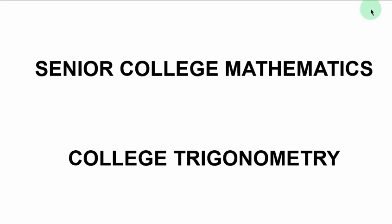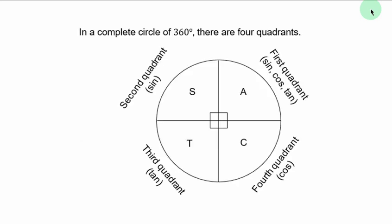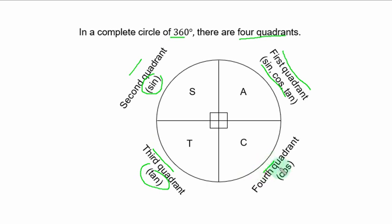Welcome to Senior College Mathematics. In this series of teachings we have college trigonometry, lesson two: angles between zero degrees and 360 degrees. In a complete circle of 360 degrees there are four quadrants. In the first quadrant all the basic ratios are positive. In the second quadrant only sine is positive. In the third quadrant only tangent is positive, and in the fourth quadrant only cosine is positive.